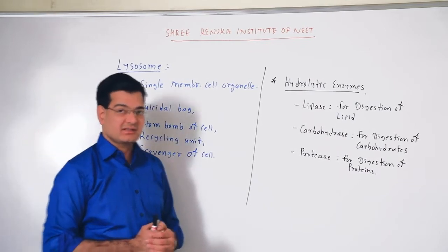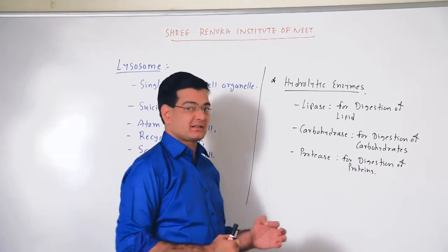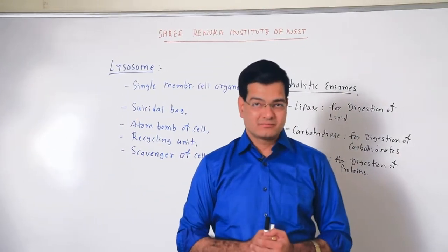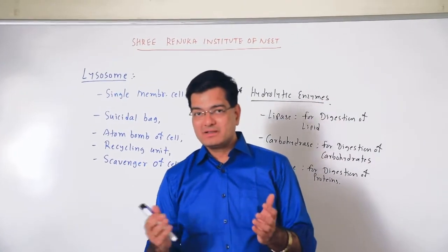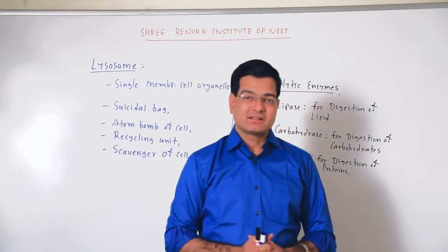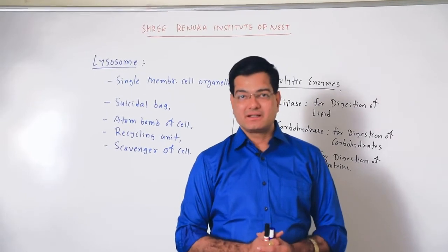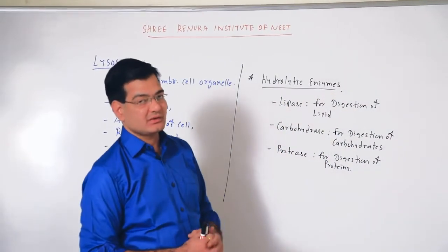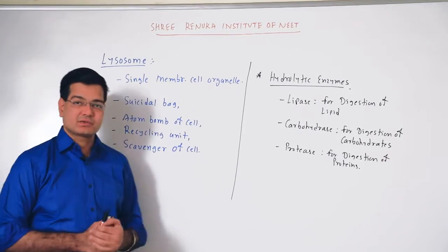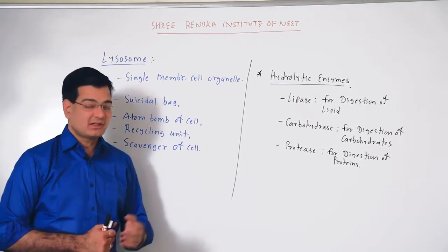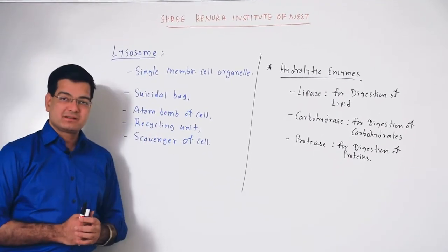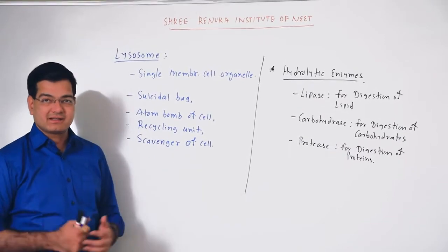In fact, this process is autolysis or apoptosis. When the cell bursts its own lysosome, the cell gets degraded — this is apoptosis or autolysis. This is the function of the lysosome, and that is why it is called the atom bomb of the cell: when it bursts, the cell dies.